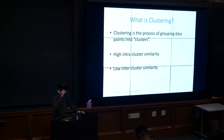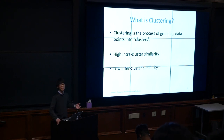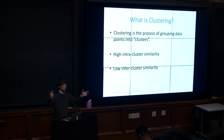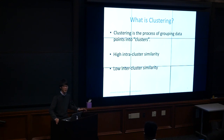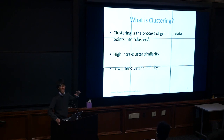Clustering is the process of grouping data points into clusters. Humans are very good at this through evolution — grouping things is beneficial to survival. The qualities of a good cluster are: high intra-cluster similarity and low inter-cluster similarity, however we define similarity.